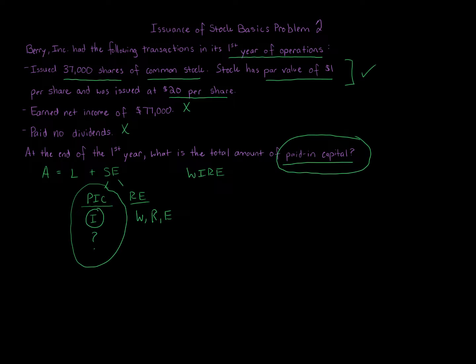All you have to do is just take 37,000 shares, the number given, multiply that by the total price per share issued at, which is twenty dollars per share, and we're going to get seven hundred and forty thousand dollars. And that is our answer. That is the total amount of paid-in capital.